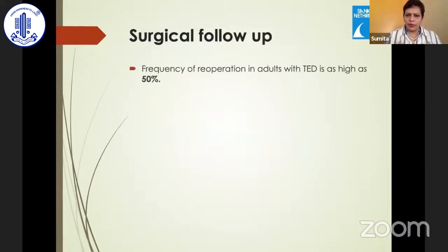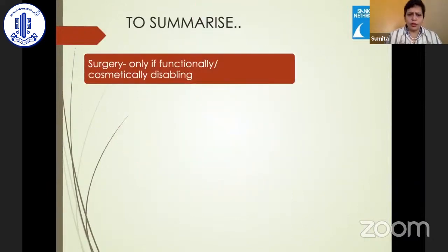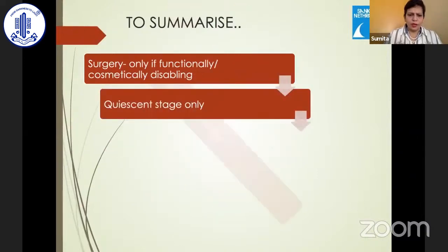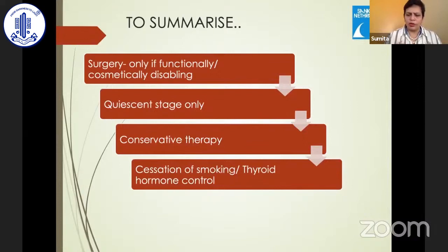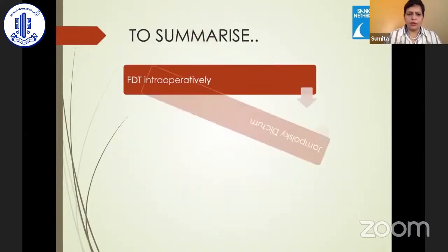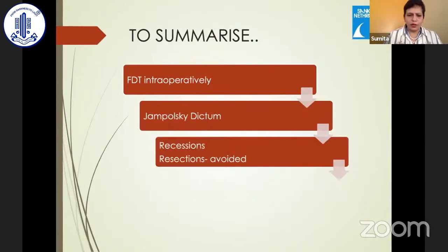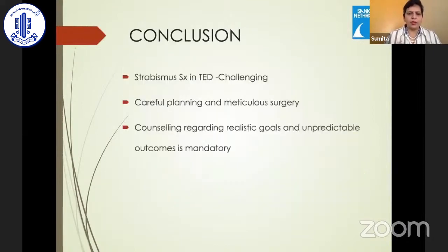Surgical follow-up is required; 50% of patients can end up needing re-operation, due to unstable or evolving disease and unpredictable results. To summarize: surgery only if functionally disabling, in the quiescent stage only, with a thorough trial of conservative therapy, and cessation of smoking. Use standard surgical nomograms carefully, stress the importance of intraoperative forced duction testing, use smaller numbers for bigger angles, perform recession as far as possible to avoid resection. If resection is attempted, limit it to the tendon and not the muscle body, and use adjustable sutures if comfortable with them.